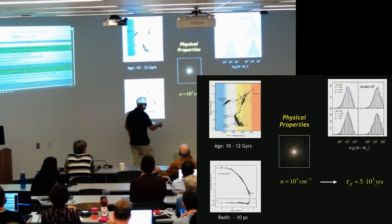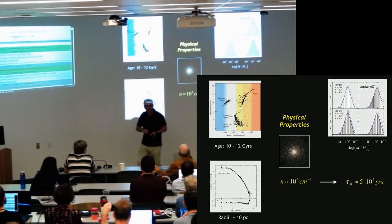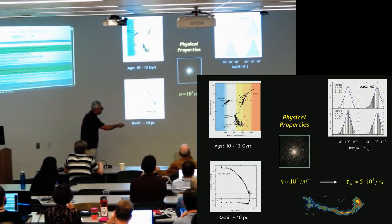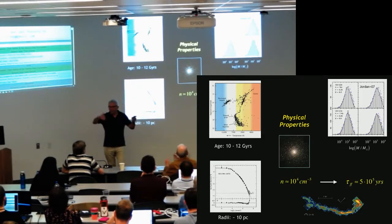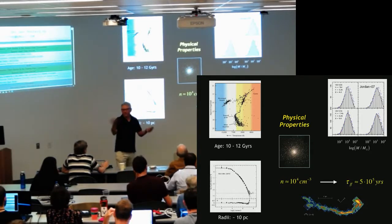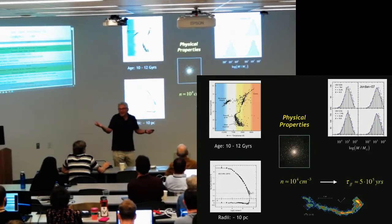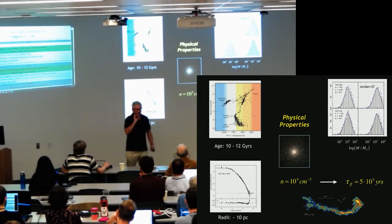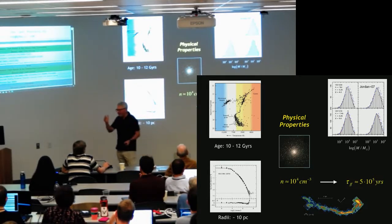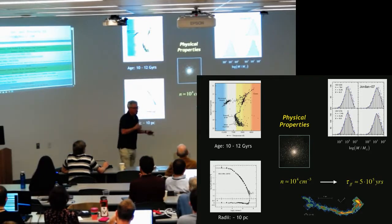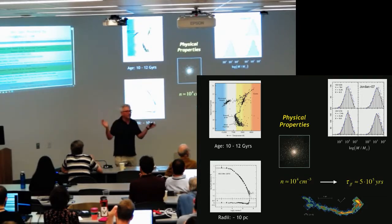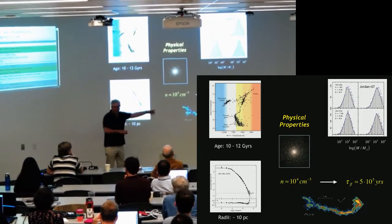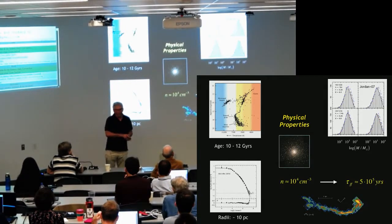Simply because if you look at the free-fall time at 10 to the 4, it's 5 times 10 to the 5 years. And that is so short that no feedback can ever affect the cloud. If you look at the normal molecular cloud, the mean density is more like 100. The free-fall time is 5 to 6 megayears, as we all know. So the cloud cannot do anything else but collapse and turn with high efficiency into stars. So forming a globular, once you have the cloud, is not the problem. The problem is getting the cloud in the first place. That requires that you form this cloud of 10 to the 6 solar masses on that short time scale, and that is tough, and I think nobody ever has worked it out.